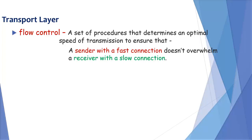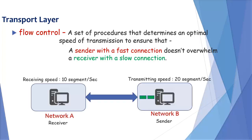Let's understand with graphics. Suppose there are two networks, network A and network B. Network A has a receiving speed of 10 segments per second, while network B has a transmitting speed of 20 segments per second.